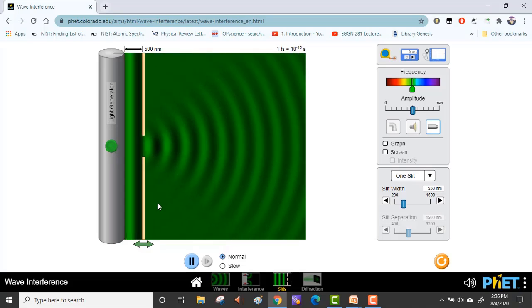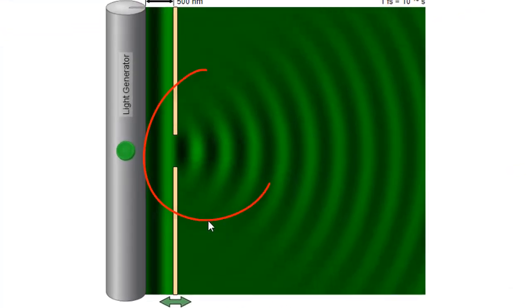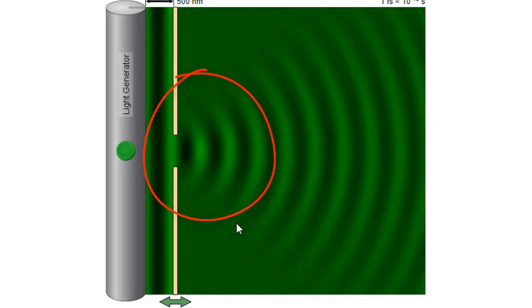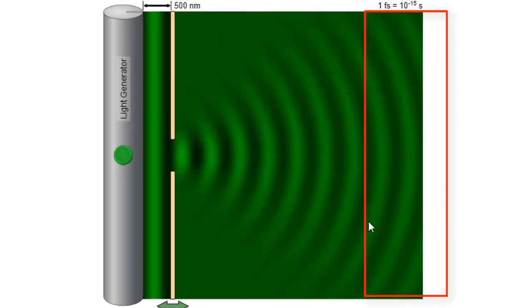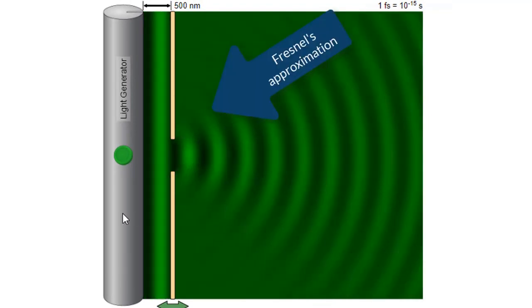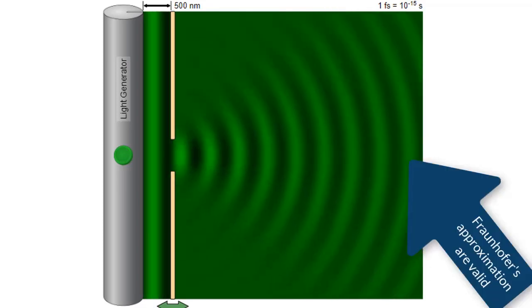We can see that adjacent to the slit, the wave fronts have a definite non-zero curvature. And as we move away from the slit, they are flattening out or the curvature is getting to zero. Close to the slits, we are in what is called the Fresnel's regime, whereas some distance away, the Fraunhofer approximations are valid.